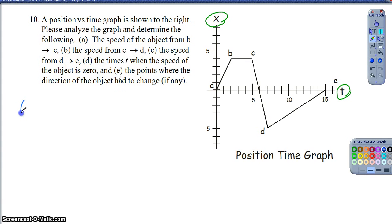So for part A, they want us to find the speed of the object from B to C. Well, the speed from B to C is actually pretty easy, hopefully, because we know on a position versus time graph, the slope tells me my velocity. And so in this case from B to C, my velocity would be 0 because the slope is 0 for a horizontal line. So the speed from B to C, or the velocity from B to C, either one of those would be 0 meters per second.